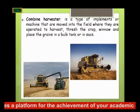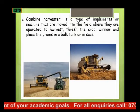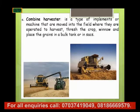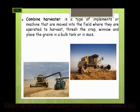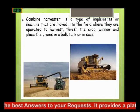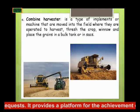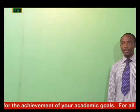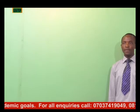We also have the combined harvester. The combined harvester is a complex machine that combines different activities of harvesting and processing. It is a type of implement or machine that is moved into the field to harvest, thresh the crop, winnow, and then place the grains in a bog tank or in a sack. That is, it combines a lot of activities into one machine.